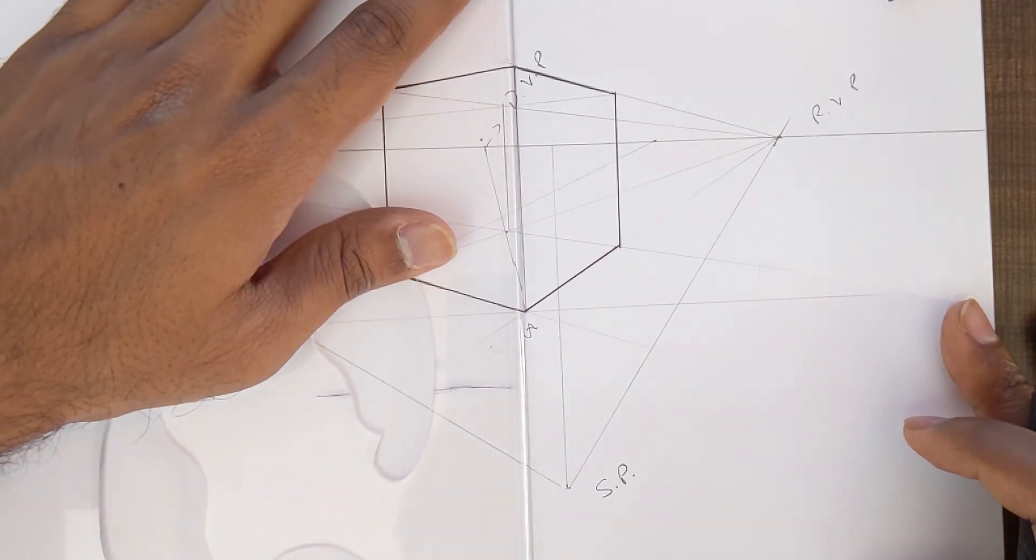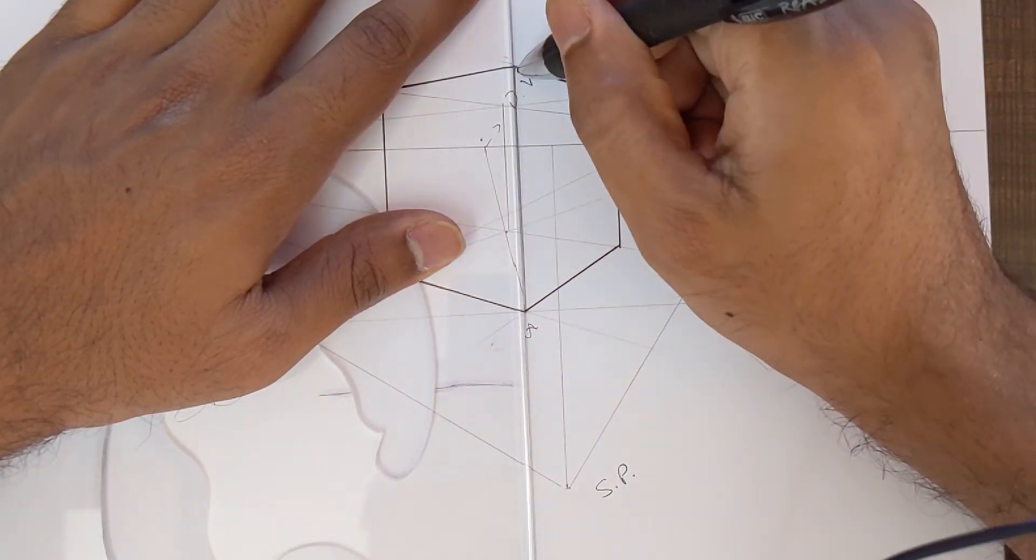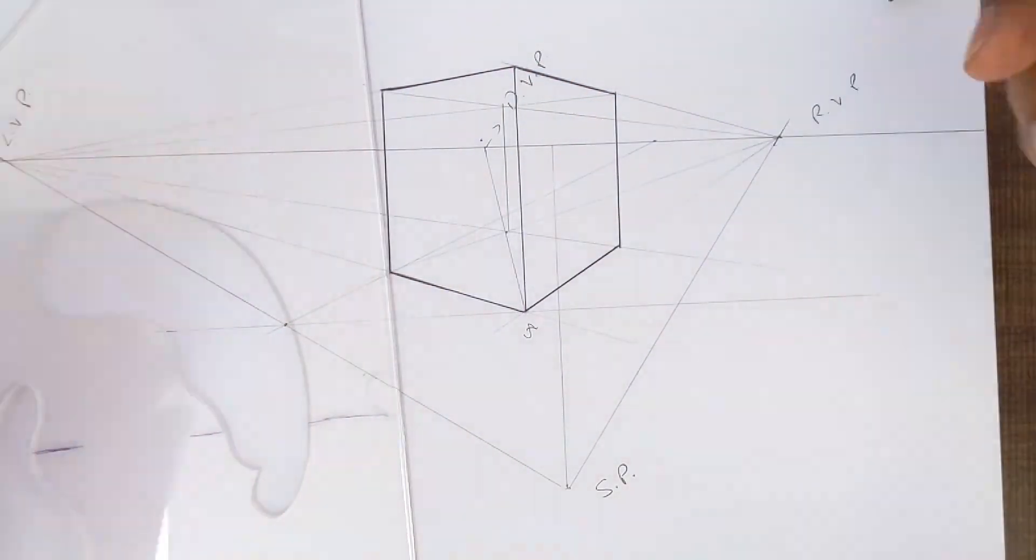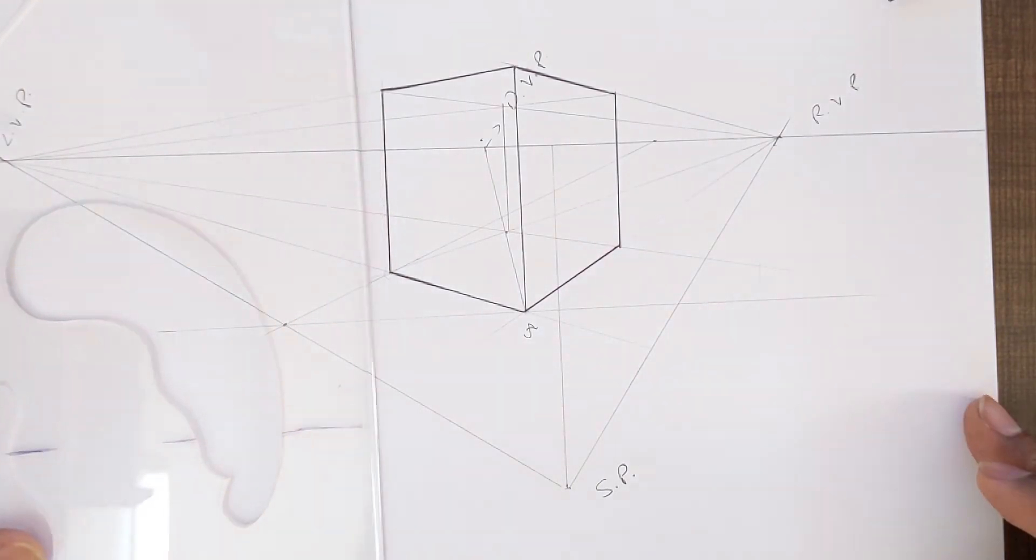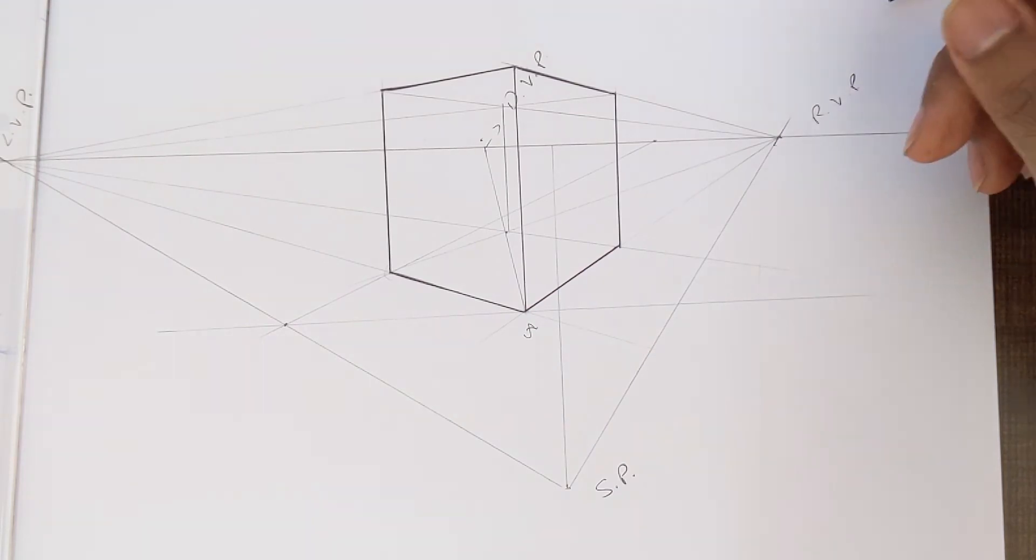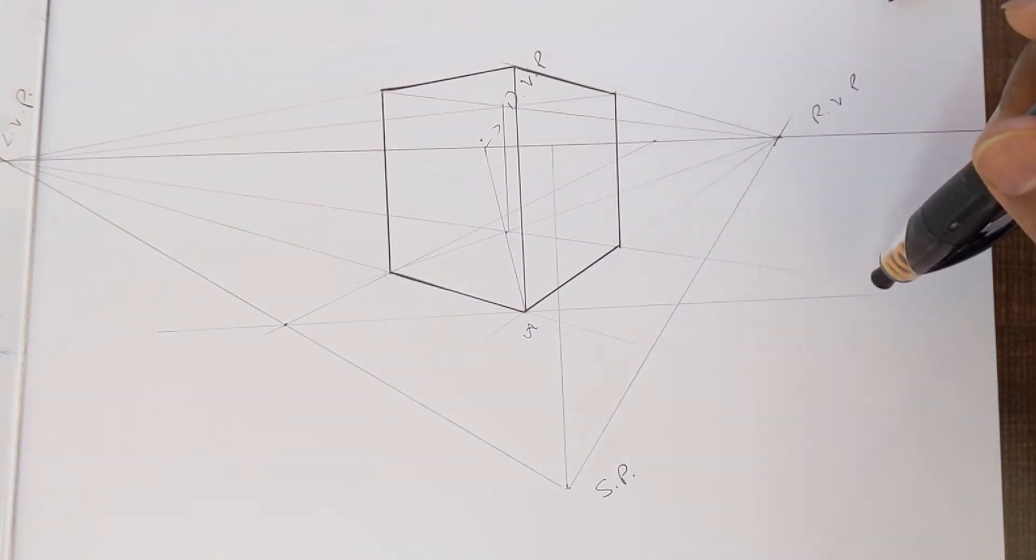So there you have it, a perfect cube in two-point perspective. Now if you are used to drawing freehand perspective drawings, this may be a bit of an overkill. But if you're an architect or an industrial designer who wants to draw precise drawings, this is a great tool to have in your bag.